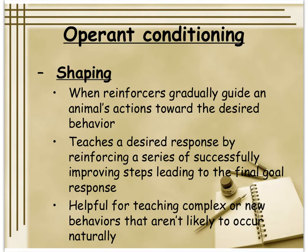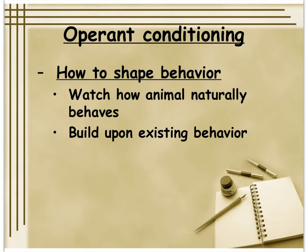Shaping is the method by which Skinner thought he could remove the need for punishment altogether. When you're looking to shape behavior, the first thing you do is watch how the animal naturally behaves in the environment, then build upon existing behavior. For example, if students wanted to shape a teacher into teaching from behind their desk, they'd first have to watch where the teacher typically stands and starts with what they're already doing in order to get them to do something they don't normally do.